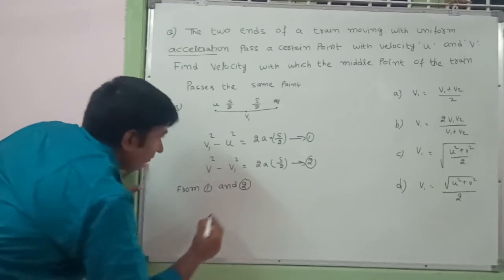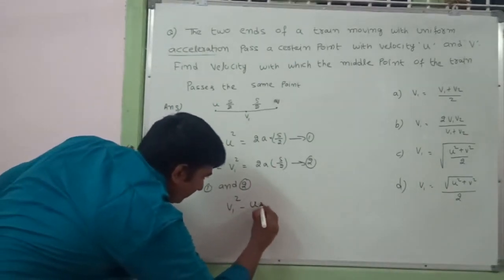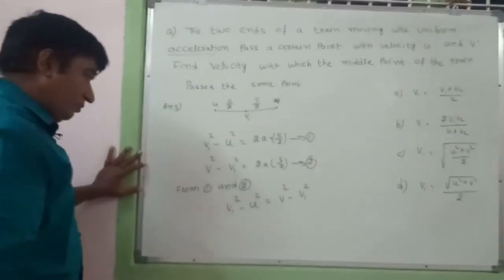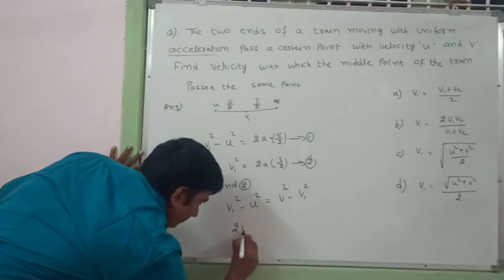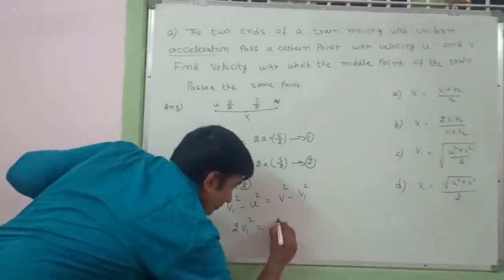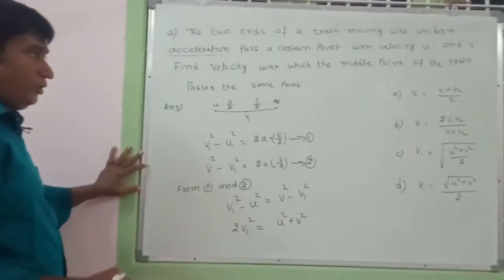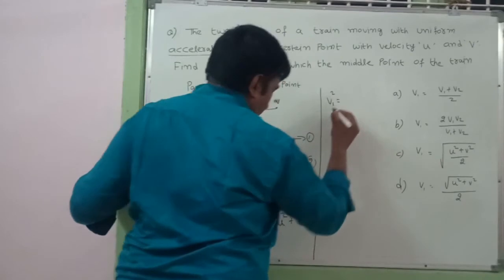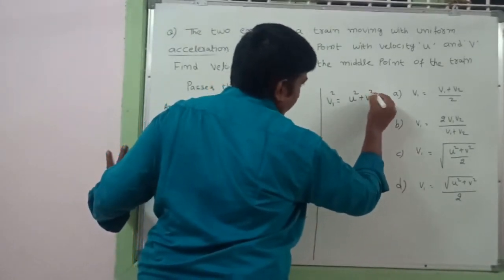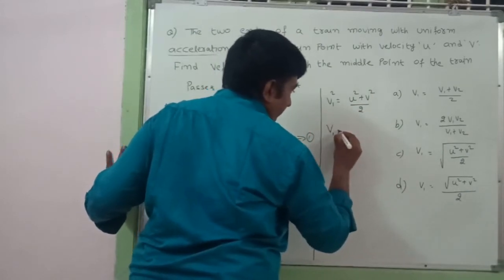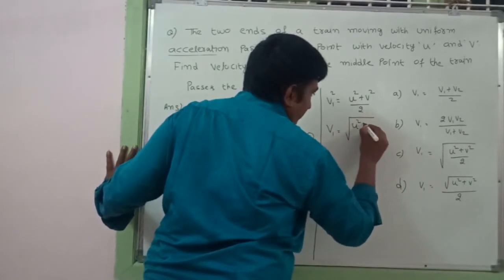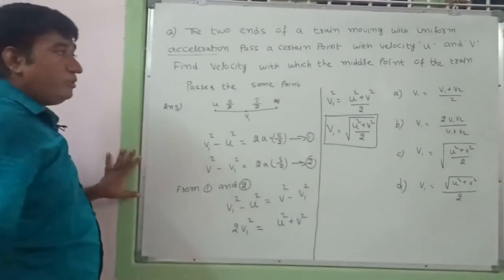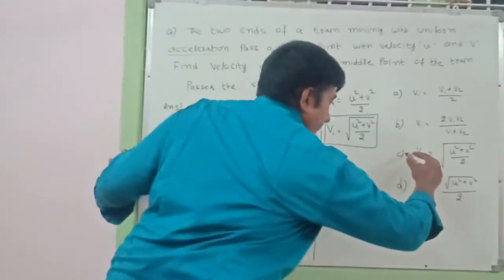From equations 1 and 2: v₁² - u² = v² - v₁², so 2v₁² = u² + v². Therefore v₁² = (u² + v²)/2, and the midpoint velocity is v₁ = √[(u² + v²)/2]. Option C is the answer.